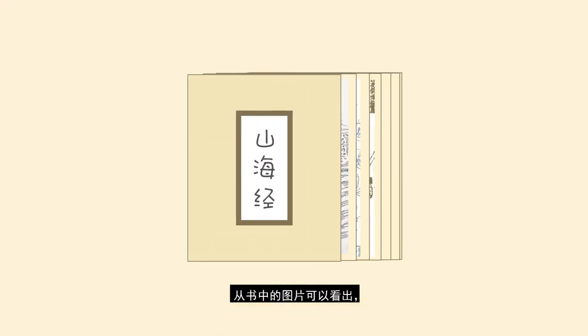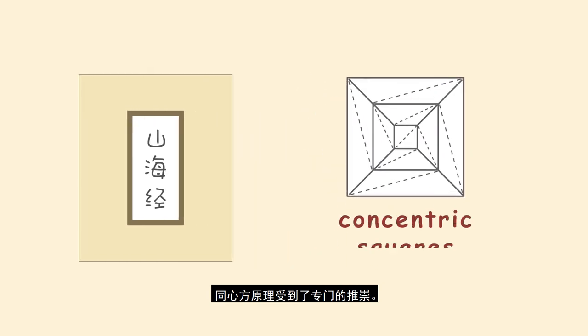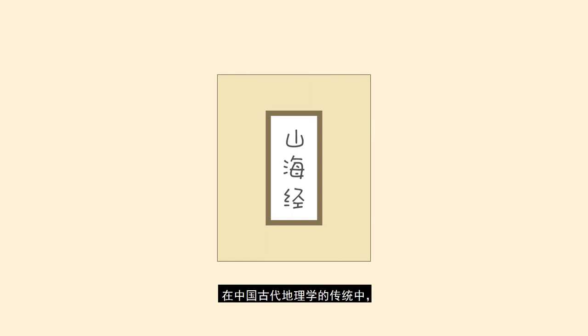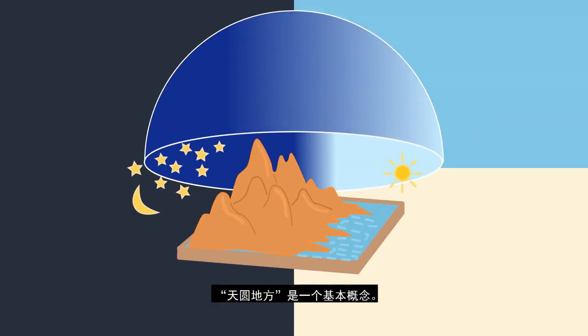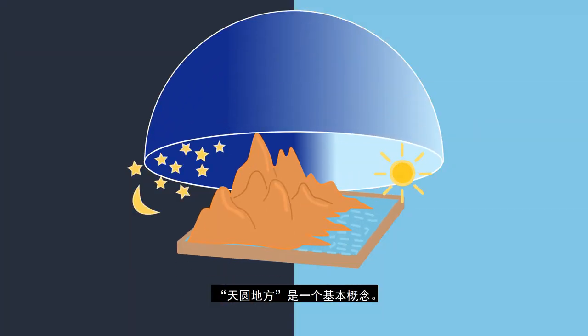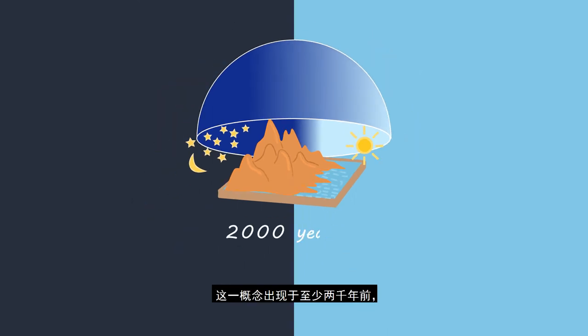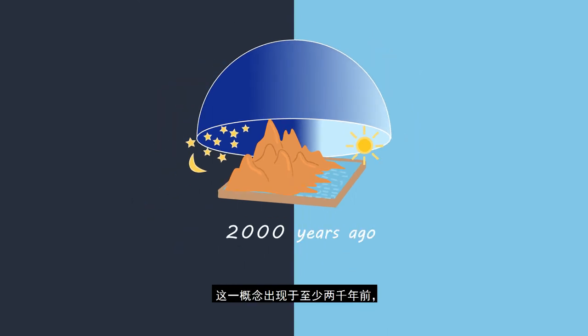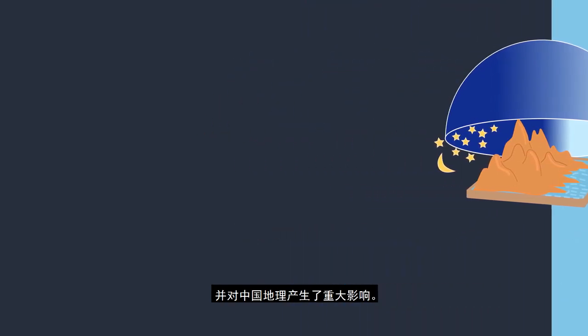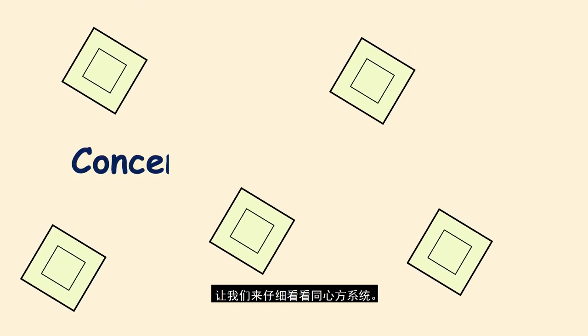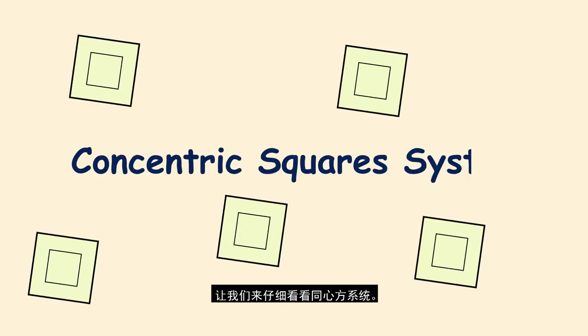It can be seen from all pictures in the book that the principle of concentric squares is exclusively favored. In the tradition of ancient Chinese geography, round sky and square earth is a basic concept. This concept appeared at least 2,000 years ago and has influenced Chinese geography significantly.